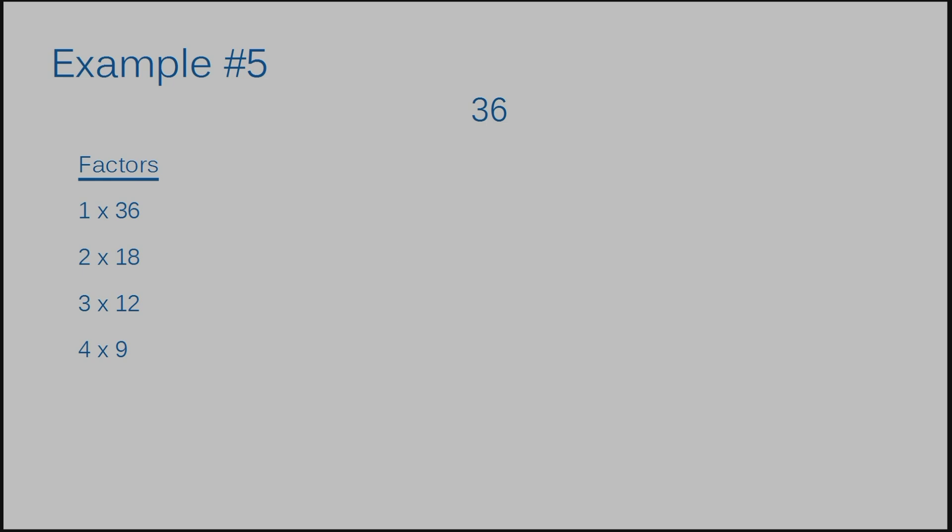Example number five: we have 36. The factors of 36 are 1 times 36, 2 times 18, 3 times 12, 4 times 9, and 6 times 6. Here's another example of a perfect square — 6 times 6, so 36 is a perfect square. The multiples of 36 are: 36, 72, 108, 144, 180, 216. To continue, you would just add 36 again.